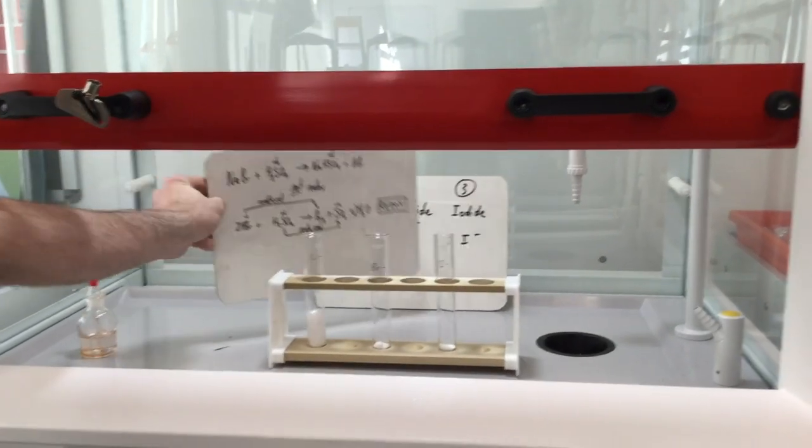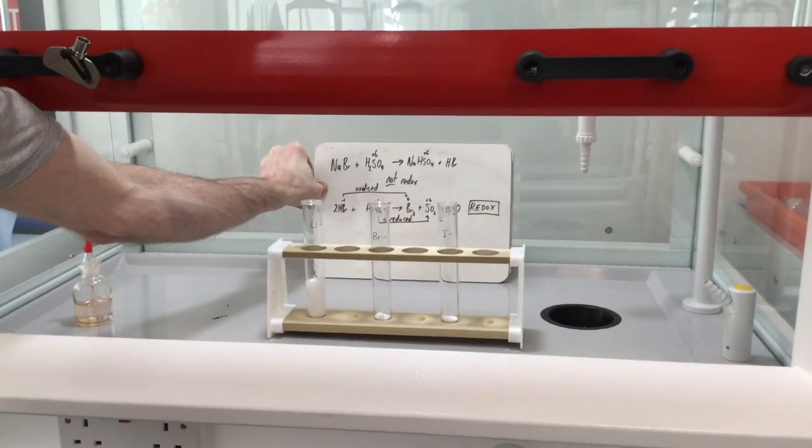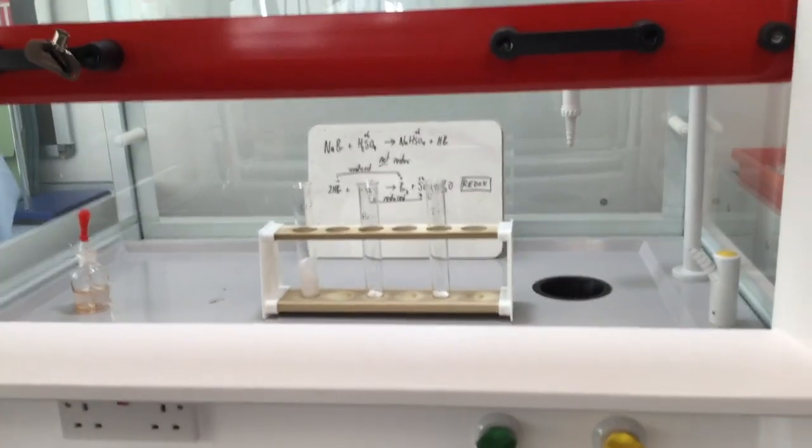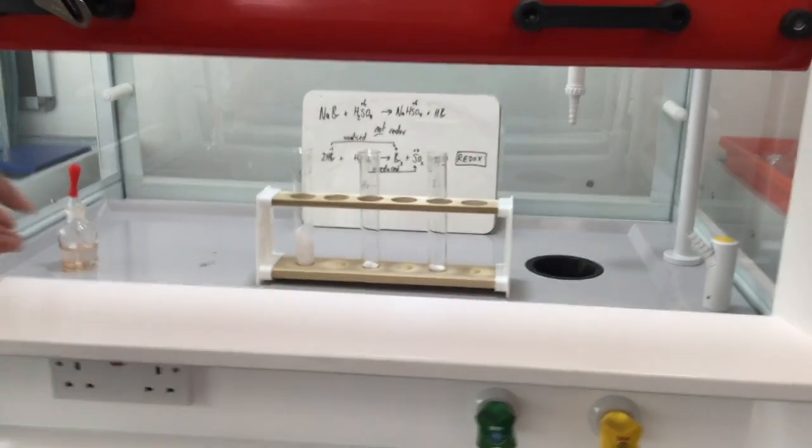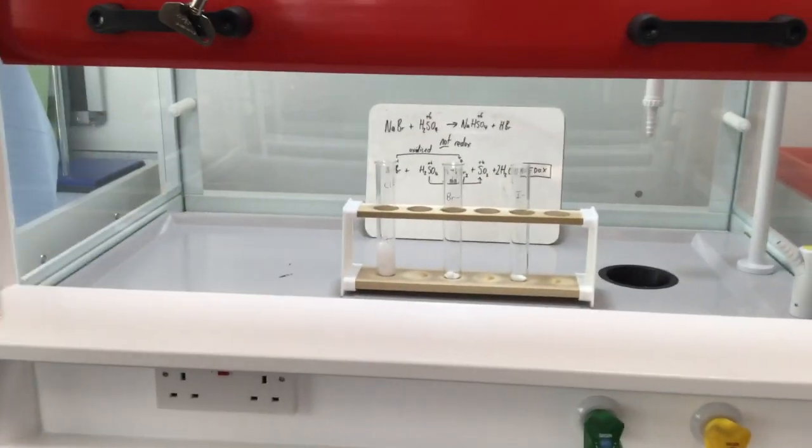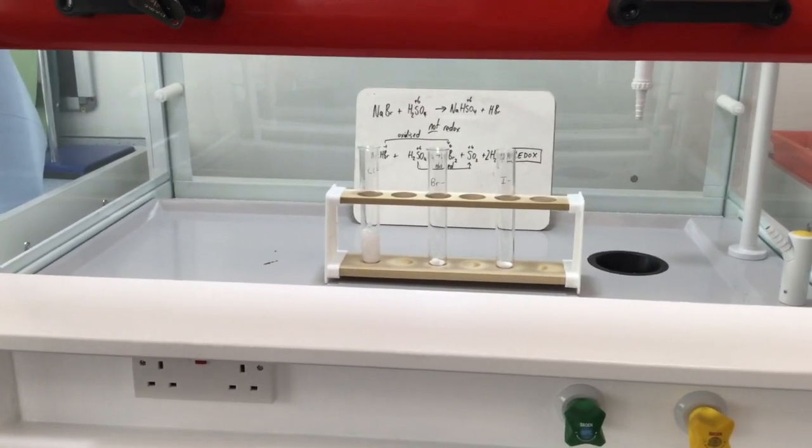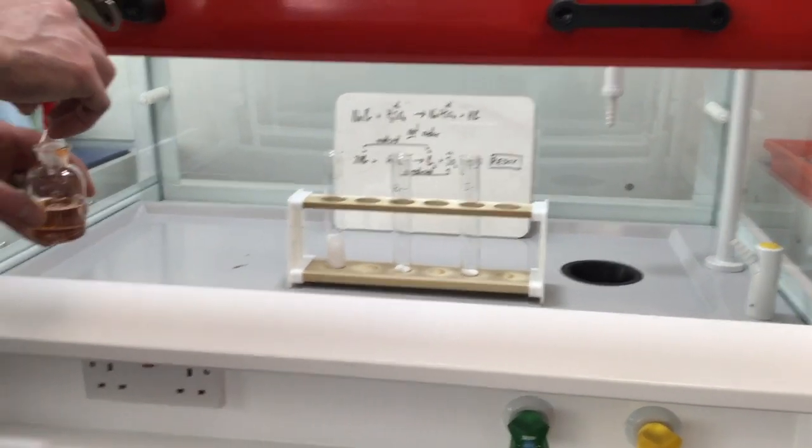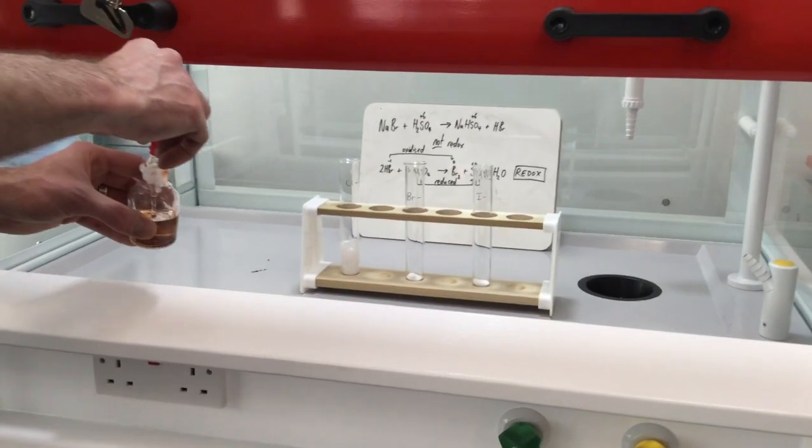We're going to do the same reaction but this time with bromide. Bromide is a better reducing agent than chloride and is able to reduce the sulfur in sulfuric acid. So it's actually going to do two reactions. The first one is the same as the chloride but the second one makes some sulfur dioxide gas as well.